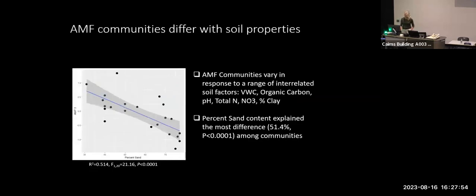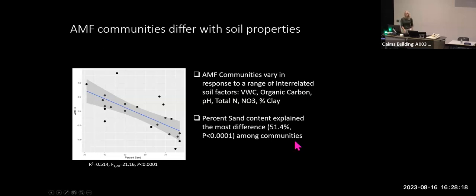By far the best predictor of differences between arbuscular mycorrhizal fungi communities, in the absence of forest cover, is the percent of sand - we see greater turnover in communities depending on the proportion of sand.